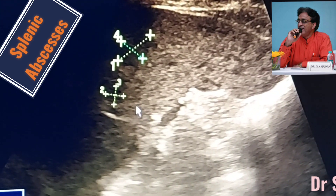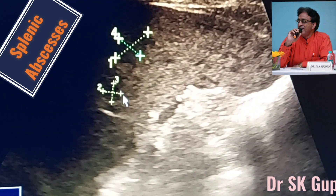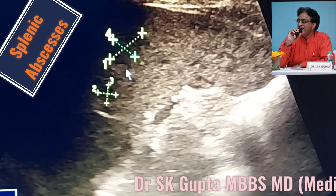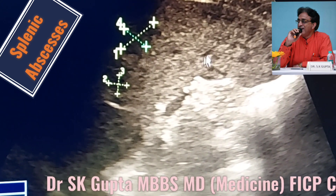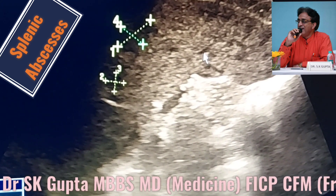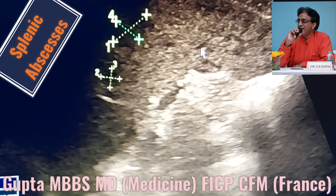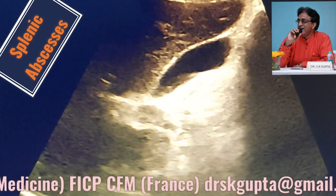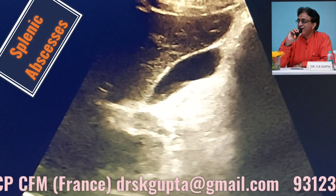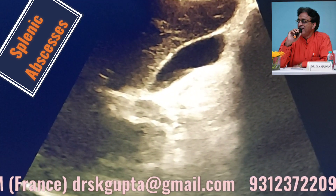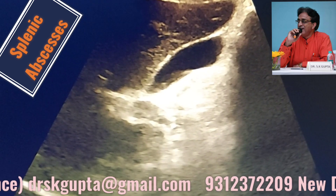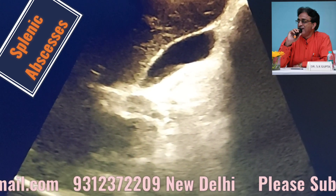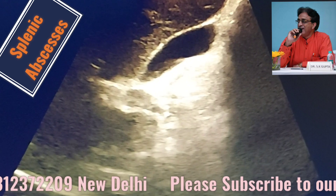When I measure the abscesses, I find that they vary from 8 millimeters to about 18 millimeters in size — they can be larger also. The liver in this patient was normal, there were no abscesses in the liver, and there were no lymph nodes anywhere in the abdomen, so we are dealing with a case of isolated splenic abscesses.